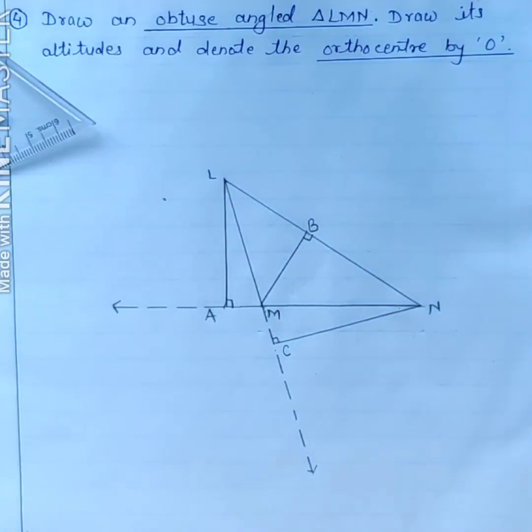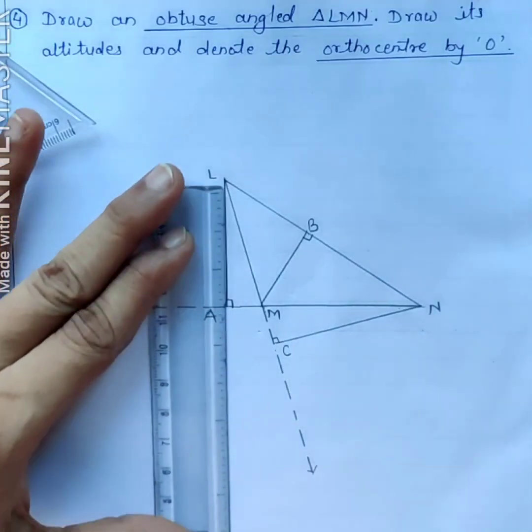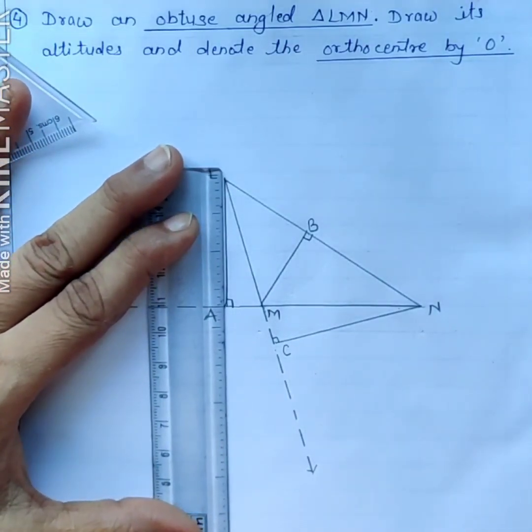Now we have to show their point of concurrence, that is orthocenter. You can see here that all these three segments, they are not intersecting each other. So we have to extend these altitudes like this.